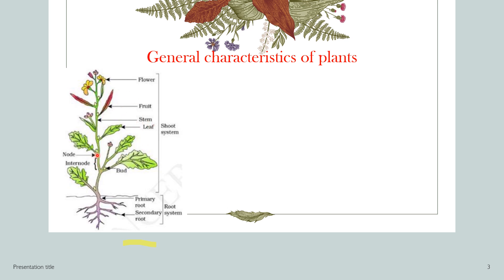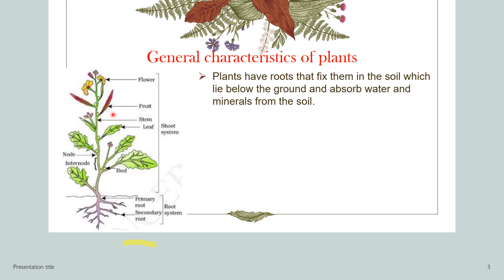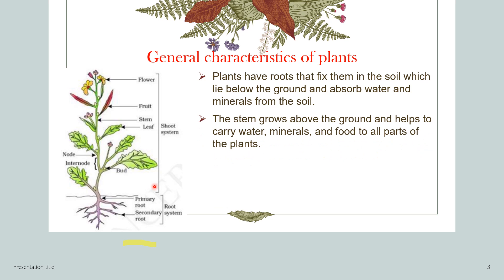Point number one: plants have roots that fix them in the soil, which lie below the ground and absorb water and minerals from the soil. The stem grows above the ground and helps to carry water, minerals, and food to all parts of the plant.